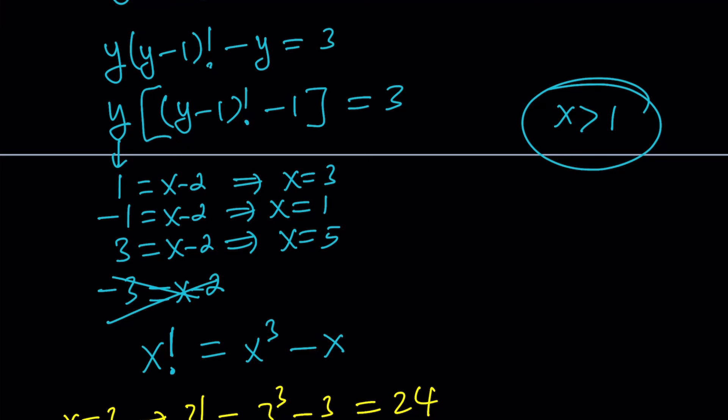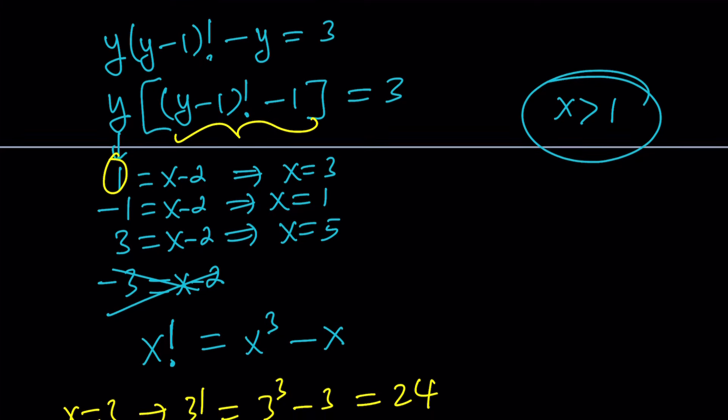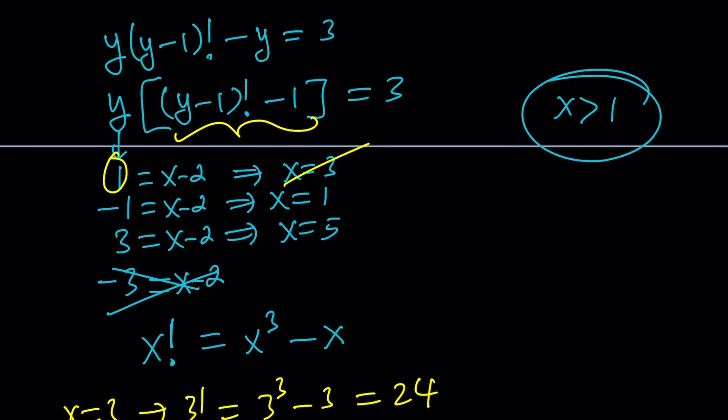Because we just assumed y equals 1, but that doesn't have to be the case, because this could be 1 as well. So x equals 3 did not work. x equals 1, as you know, is not going to work, because 1 factorial does not equal 0. So this is not going to work either.